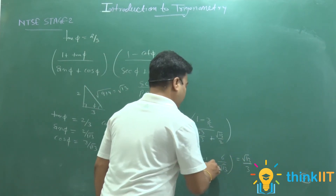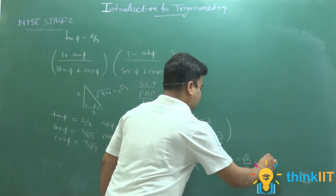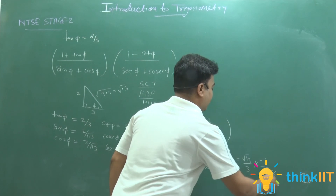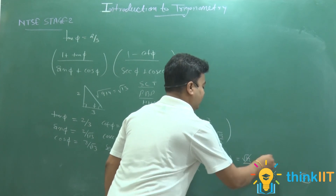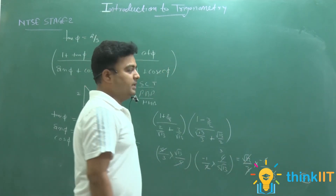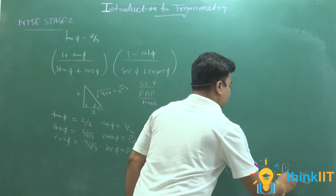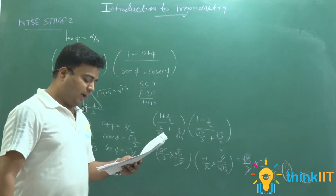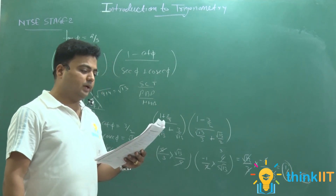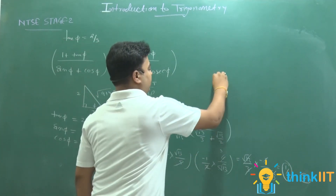तो दूसरा bracket = (−1/2) / (5√13/6) = −3/(5√13)। अब दोनों brackets multiply करने पर: (√13/3) × (−3/(5√13)) = −1/5। Final answer is −1/5, which is option number 1. Option number 1 is the correct answer.